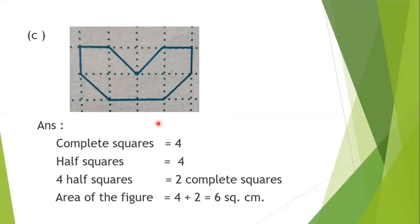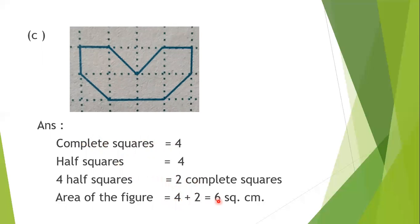Next figure — see how many complete squares are there: one, two, three, four — it covers four complete squares. There are also some half squares. Let's count: one, two, three, four — it also has four half squares. Four half squares make two complete squares. So the area of this figure will be four plus two — six square centimeters.